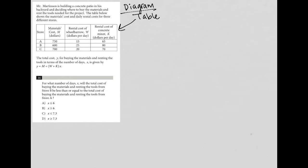So it looks like I have three different stores, A, B, and C, materials costs, rental costs of a wheelbarrow per day, and rental costs of concrete. So all these different costs are separated by the type of store or the name of the store.